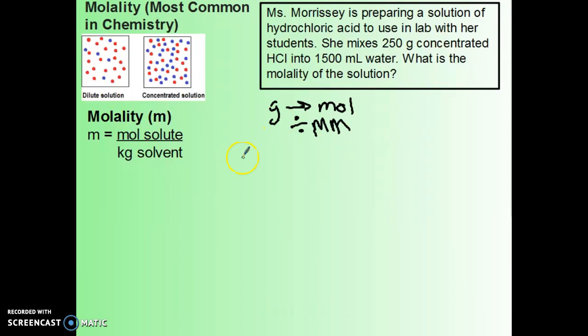If we have 250 grams of HCl—HCl is our solute—this is what we need to convert to moles. We need to divide by the molar mass of HCl. The mass of chlorine is about 35.5, the mass of hydrogen is about 1, so our molar mass that we're going to divide by is about 36.5 grams per mole.